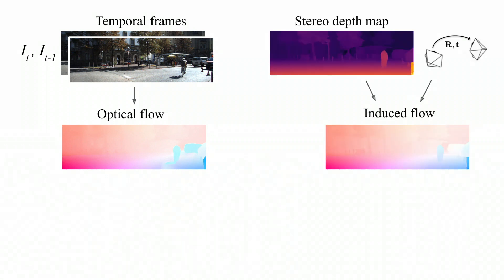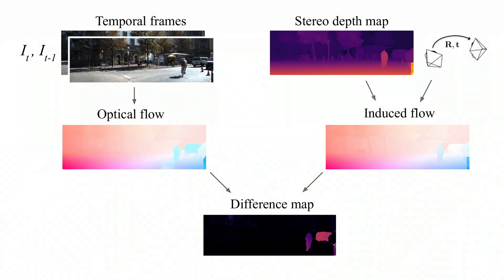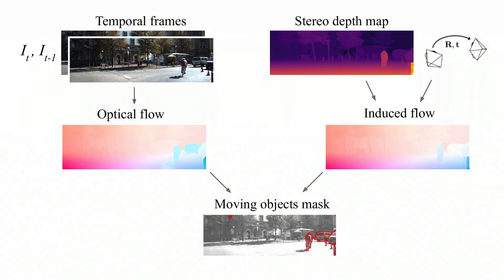To detect moving objects, we compute optical flow between our target frame and the previous frame in time. We separately compute the flow that would be induced in a static scene under the known camera motion. Pixels where optical flow differs from induced flow are inferred to be on moving objects, and are ignored in the loss function.